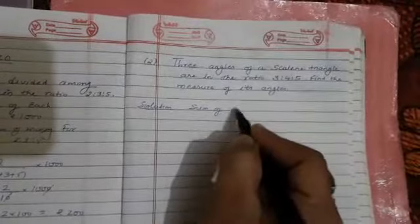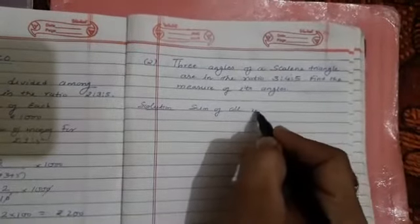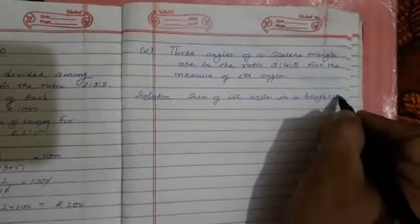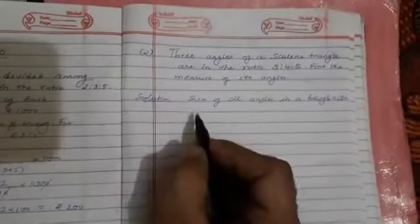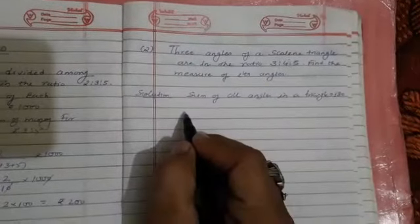Sum of all angles in a triangle is 180 degrees. So we have the ratio of angles. Let the angles be A, B, and C.